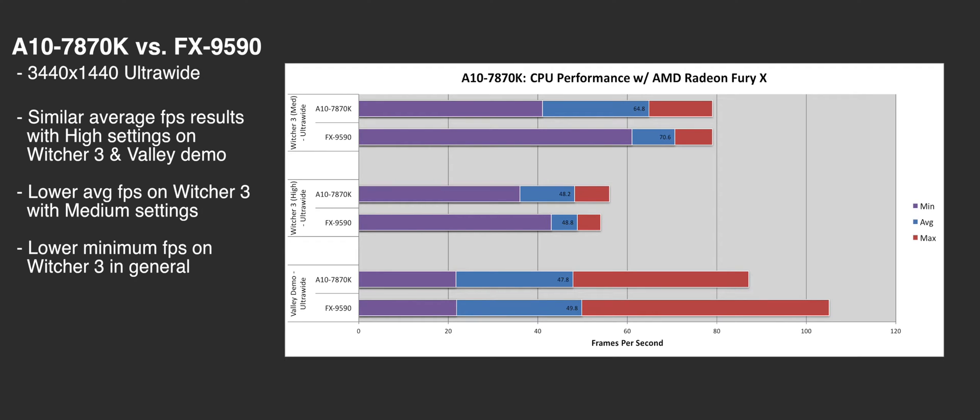Before wrapping up, I looked at how the 7870K functions as a CPU by pairing it with the biggest GPU I had — an AMD Fury X — and running it at ultrawide 3440x1440. Looking at The Witcher 3, which is not kind to Radeon GPUs in general, the average dips noticeably from the FX-9590 but is still above 60 fps. Where it becomes problematic is the significant dip in minimums from above 60 down to just above 40 fps, occurring in village and town areas with lots of NPCs and AI activity.